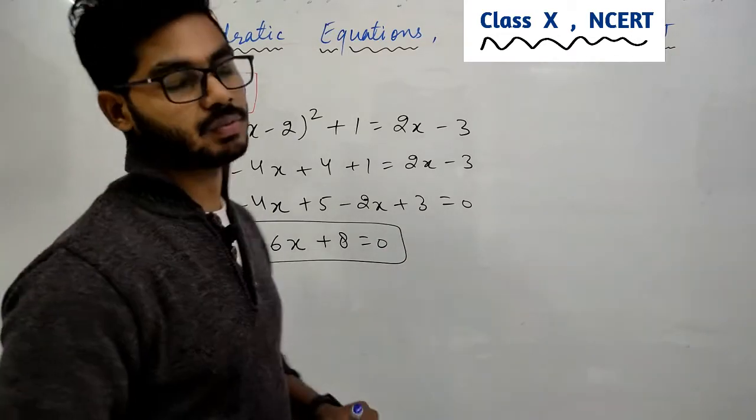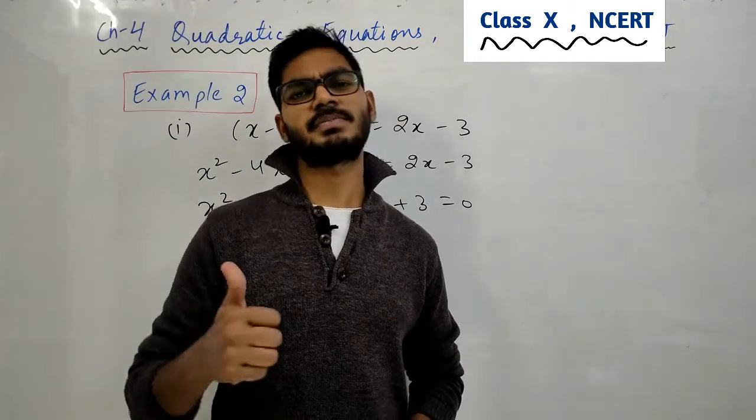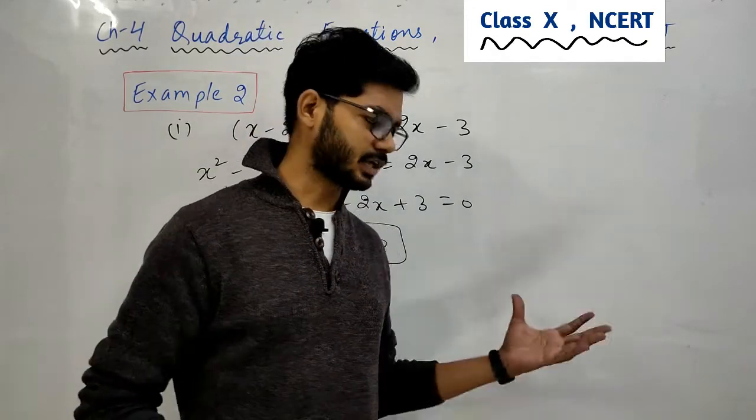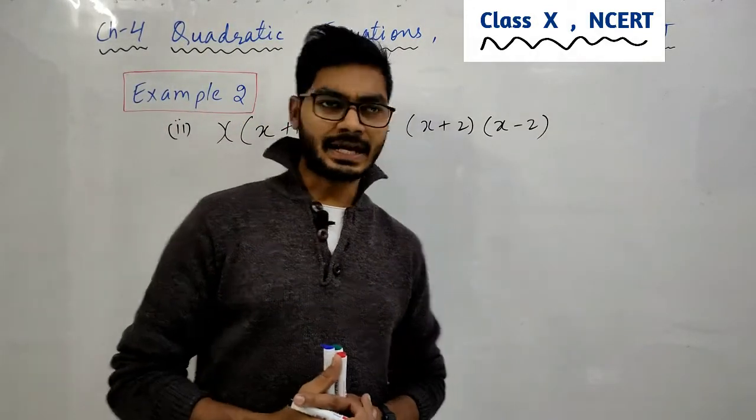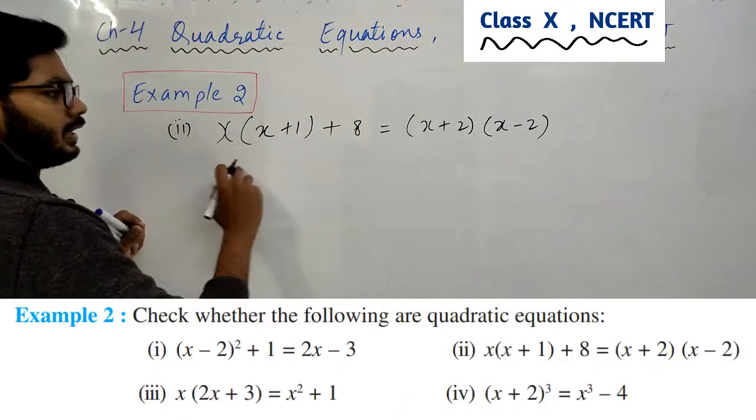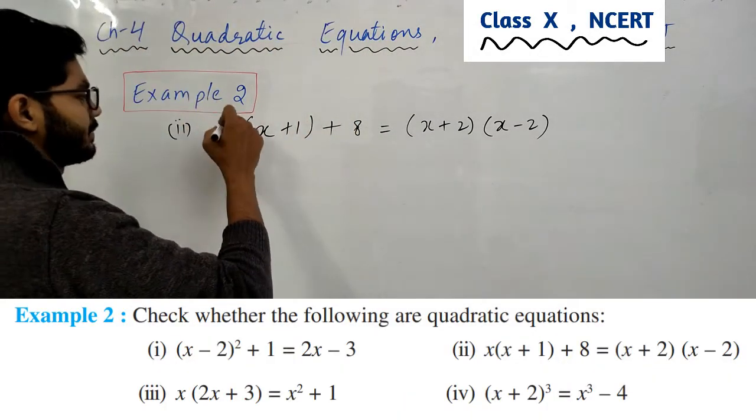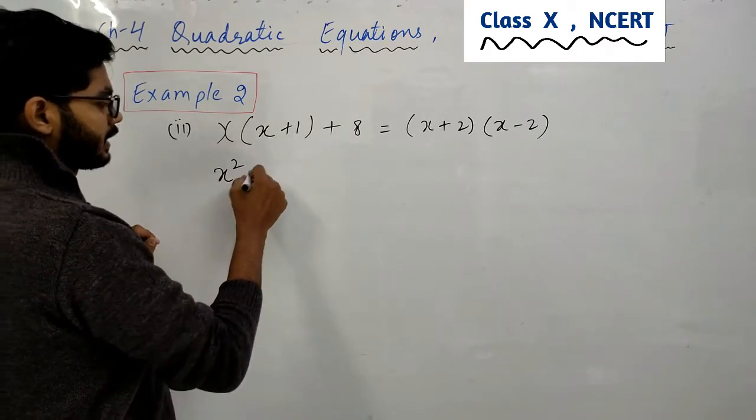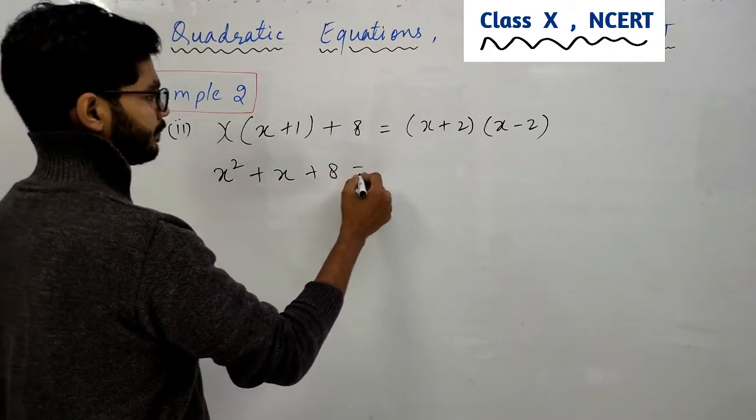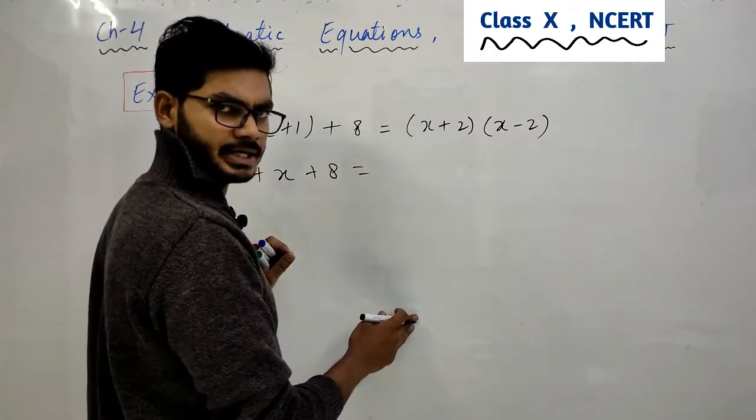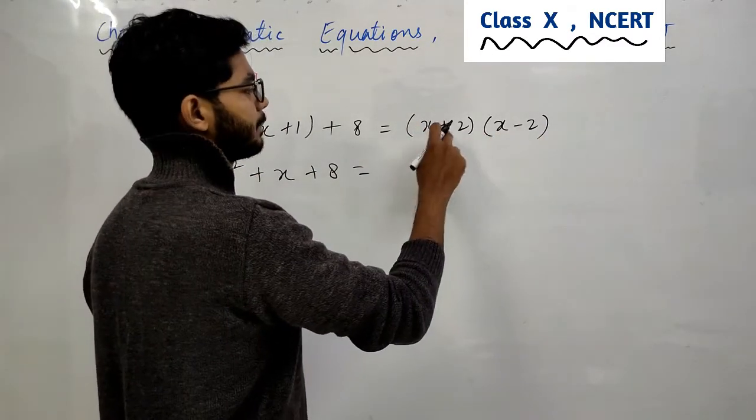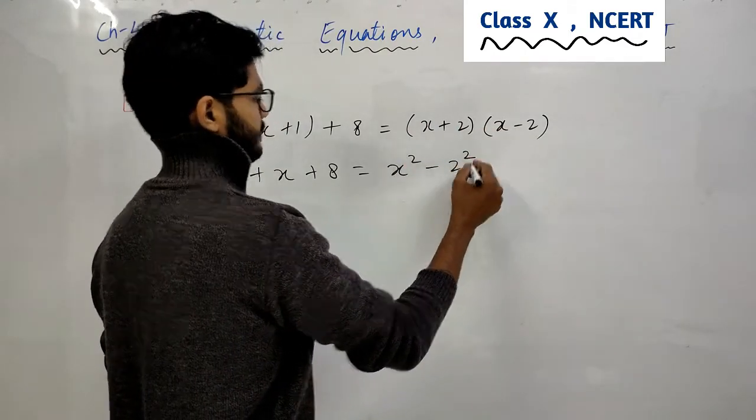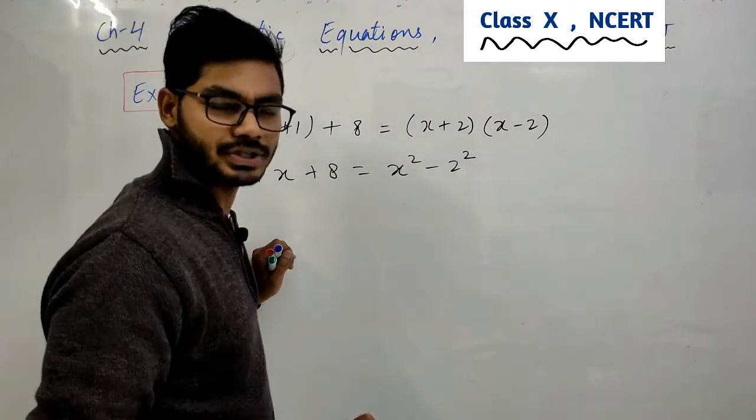So this is the quadratic equation. First part is the quadratic equation. See the second part please note. See the second part. This is the multiply you will get x² plus x and this is the multiply x(x+1) + 8 = (x+2)(x-2).